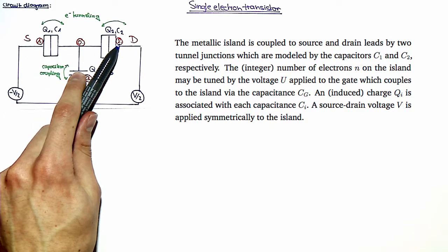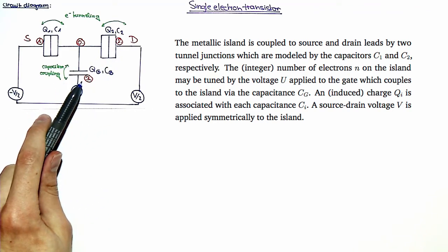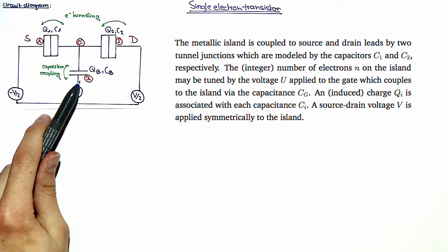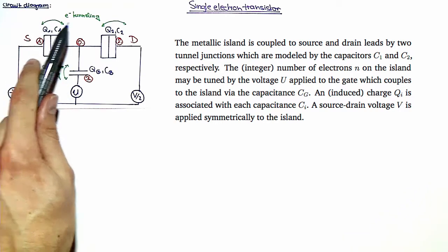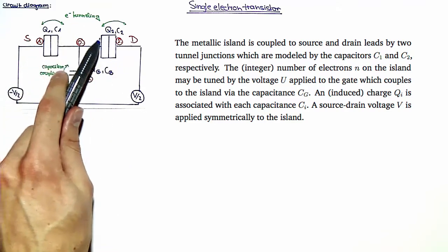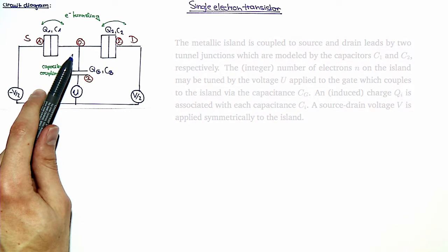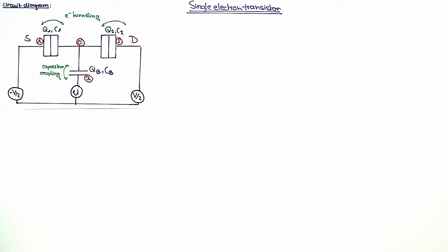By changing the voltage on a gate that is capacitively coupled to the metallic island, the number of electrons on the island can be changed. This is possible because there is tunnel coupling of the source and drain to the metallic island. The electrons on the island induce charges on the capacitances.